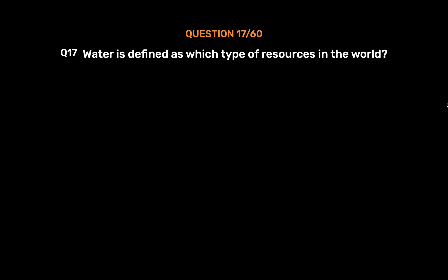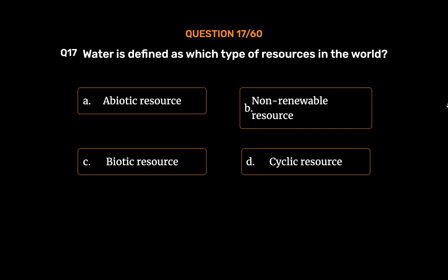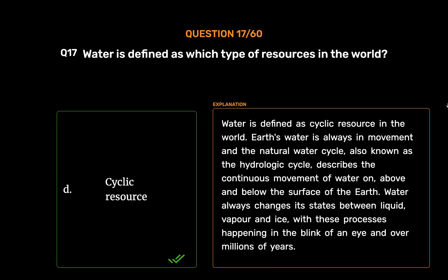Question number 17: Water is defined as which type of resource in the world? Option A: a biotic resource, option B: non-renewable resource, option C: biotic resource, option D: cyclic resource. The correct answer is option D, cyclic resource. Water is defined as a cyclic resource. Earth's water is always in movement, and the natural water cycle, also known as the hydrologic cycle, describes the continuous movement of water on, above, and below the surface of the earth.